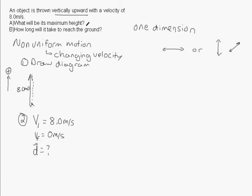Displacement is our question mark. We also know acceleration because it's gravity — we're going against gravity in the y-direction, so acceleration is downward, making it a negative value: negative 9.8 meters per second squared. There are all our knowns and unknowns. Now we have to figure out the maximum height, so we go to our formula sheet to pick the correct formula.